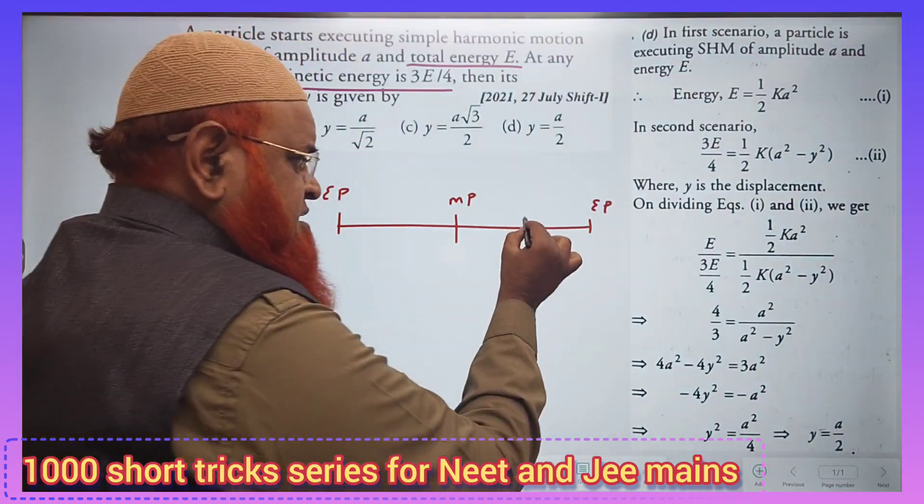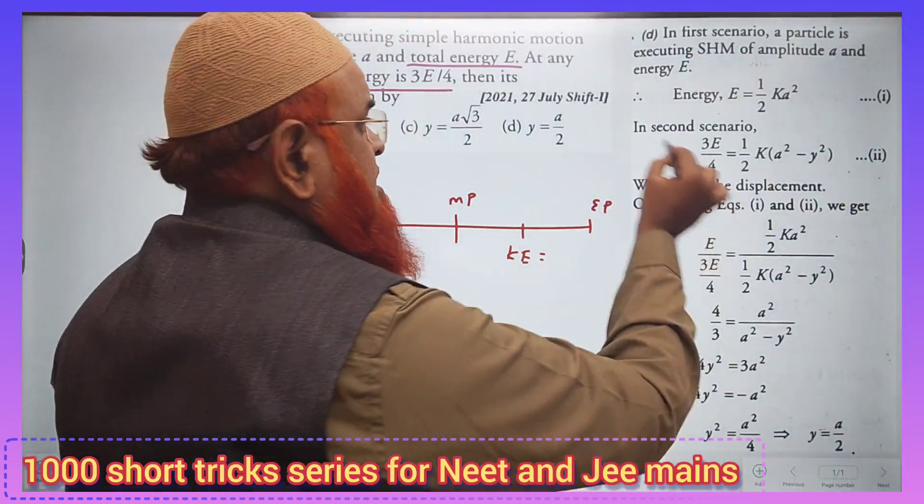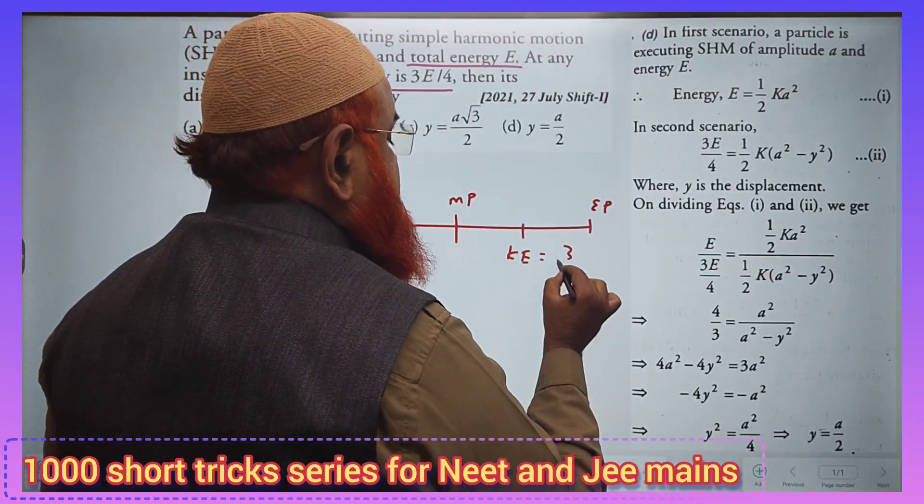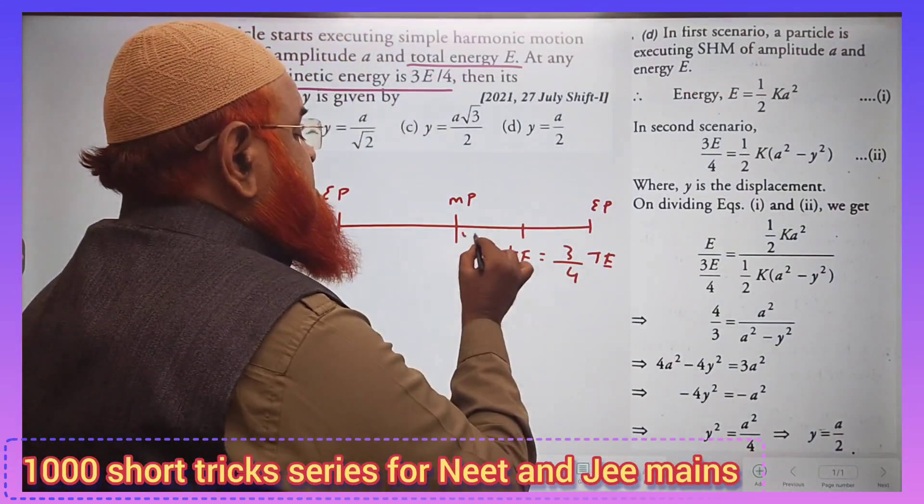For example, at this place, kinetic energy is, according to the question, it is 3 by 4 times of the total energy. Then what is this displacement?